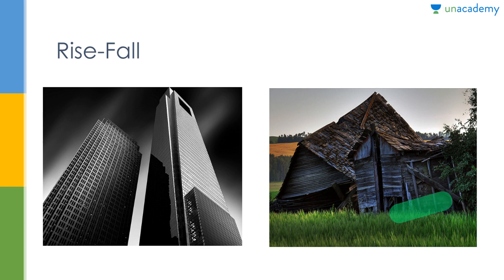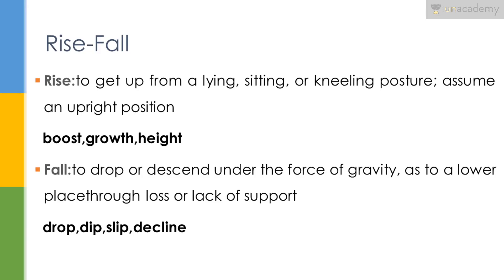Fall means to go down or collapse. Just as you can see this hut has actually fallen off because of a windstorm or any sort of a disaster that has taken place in an area. A lot of buildings fall because they are not structurally built in a manner that their foundations would support a natural disaster. Rise is basically to get up from a lying, sitting, or kneeling posture — to assume an upright position. The synonyms of rise are boost, growth, and height. The synonyms of fall are drop, dip, slip, and decline.